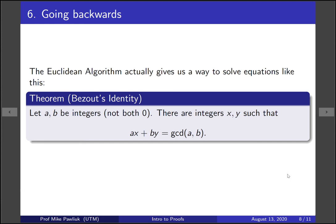Now the Euclidean algorithm is great because it tells us how to compute GCDs, but there's a second part. It also tells us how to solve equations like this. So let a and b be integers, not both zero. Then you can find two integers x and y that solve this equation: ax + by is the GCD.